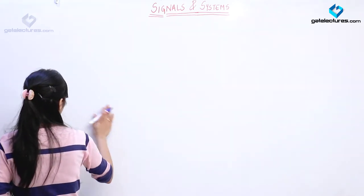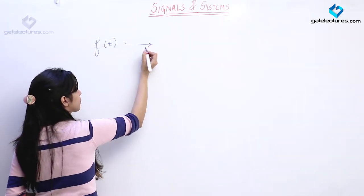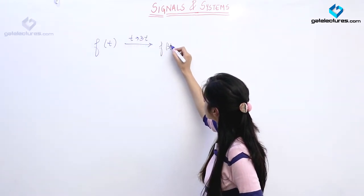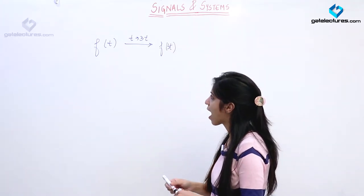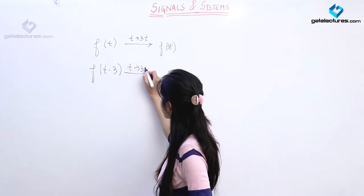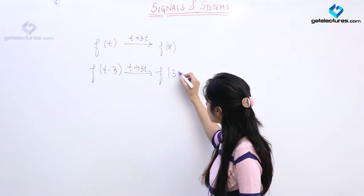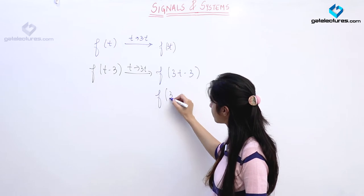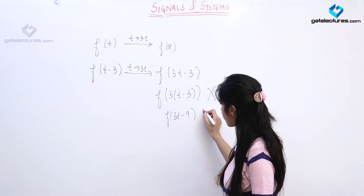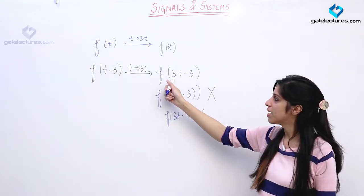Suppose I have a signal f(t). If I am performing time scaling, this becomes f(3t). Now suppose I initially had a signal f(t-3) and I perform the same time scaling operation — this is going to become f(3t-3), not f(3t-9). Why? Because this operation applies only on the independent variable t, not on the complete argument.